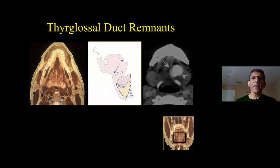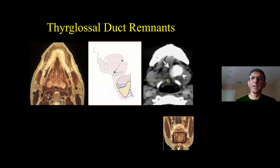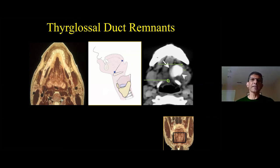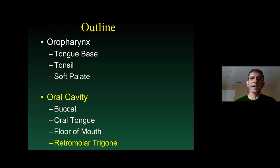We talked about thyroglossal duct remnants earlier at the tongue base — the foramen cecum. This is an example of a thyroglossal duct remnant extending inferiorly, leaving little droplets of tissue involving the floor of the mouth. How do we know it's thyroglossal duct remnant? Because it is very, very dense on a non-contrast CT — remember, the thyroid gland concentrates iodine.